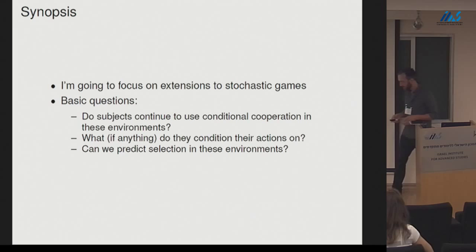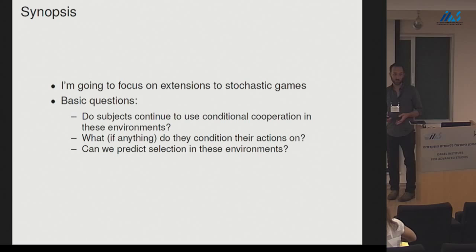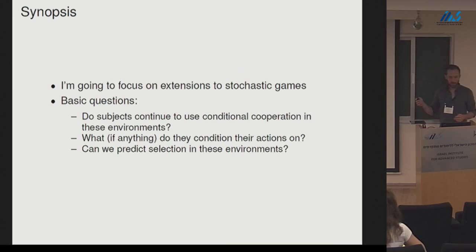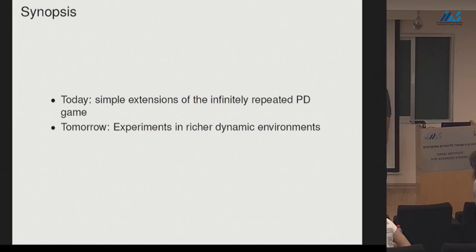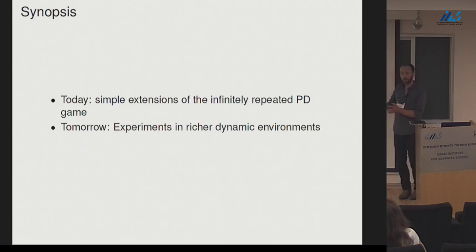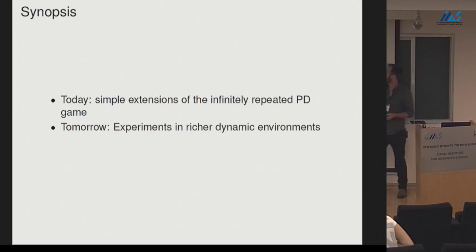The literature here is a little bit less well-developed than the infinitely repeated games literature. I'm going to focus a little bit on some of my own papers — not because of my ego, but because there's not so much literature here and I actually have access to the data. Today I'm going to look at very simple stochastic games, going from one state in the PD game to two states — the simplest extension to stochastic games I can make. Then tomorrow I'm going to move to richer dynamic environments with much larger state spaces or a continuum of states.